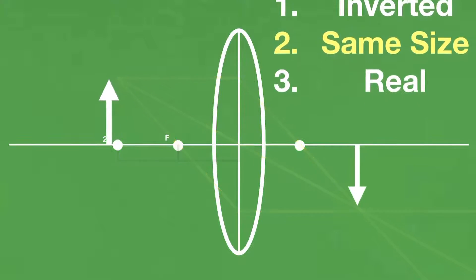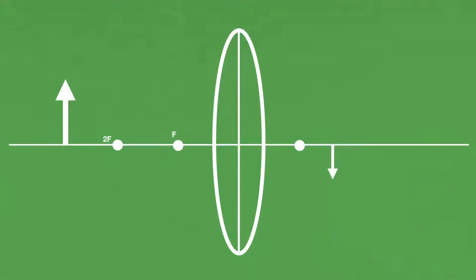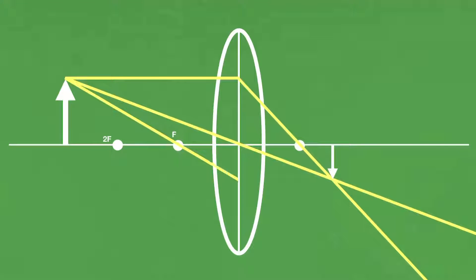Now, if the object is beyond 2f, that is to say, beyond twice the focal length, then, as you'll see after drawing the rays, the image is still inverted and still real, but instead of enlarged or unchanged in size, it is diminished, which just means it's smaller.